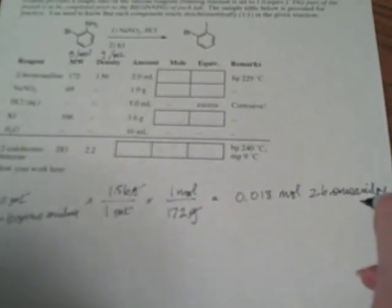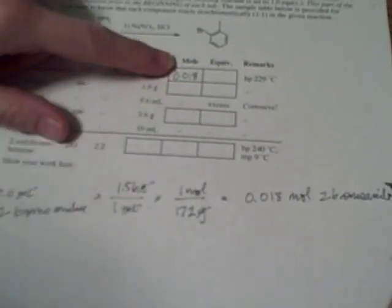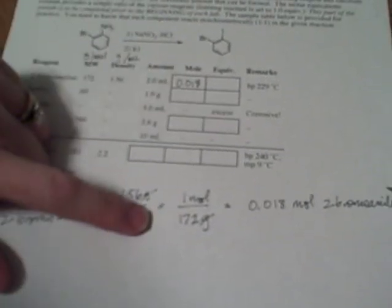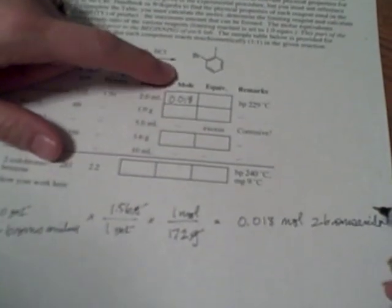So notice when I'm showing my work I put in my units, I put in what species I'm working on so that I'm not mixing up my problems as I'm working on them. So 0.018 is what I'll put in here for my moles of 2-bromoaniline. A lot of times these mole numbers are very small numbers so if you want to have this in millimoles instead you can multiply all these by a thousand so I would have 18 millimoles. That would be okay.